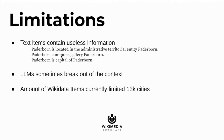There are limitations with this prototype. The text items we generate sometimes contain useless information — things like 'Paderborn is capital of Paderborn' or 'Paderborn is located in the administrative territorial entity Paderborn' — which needs tuning. The language model sometimes breaks out of the context and tries to answer based on training data rather than the provided context, which is exactly what we don't want. And it's limited to just 13,000 city items — a very small fraction of WikiData.